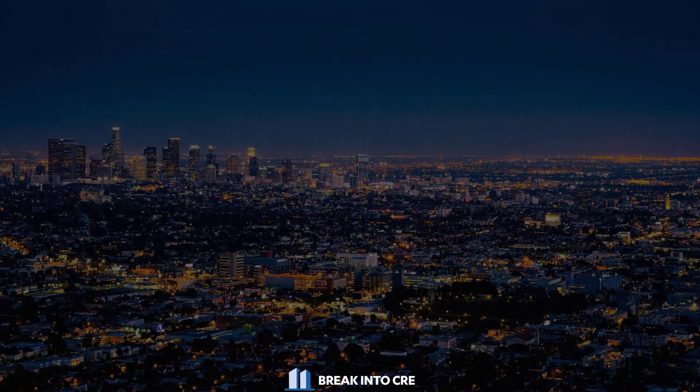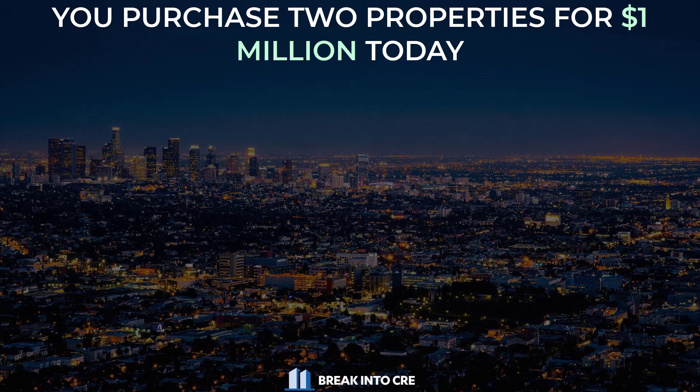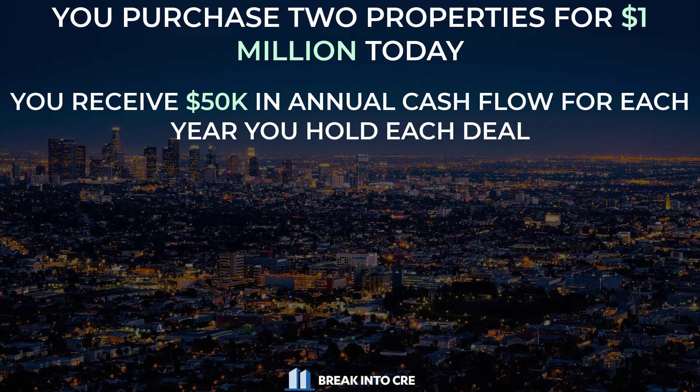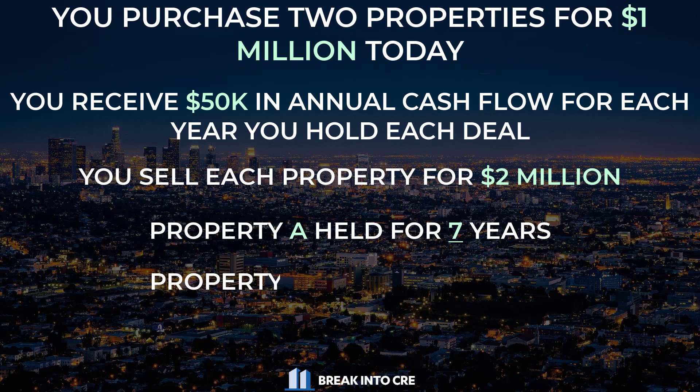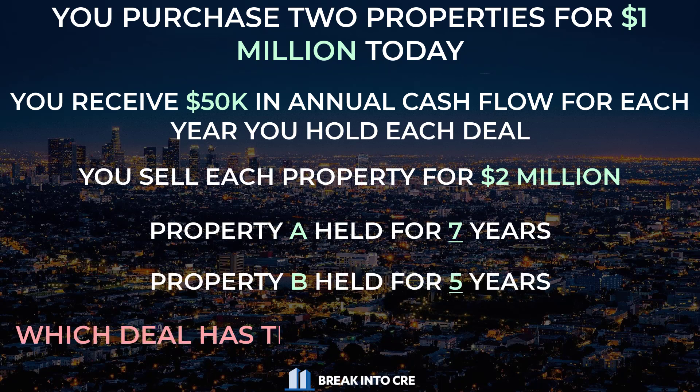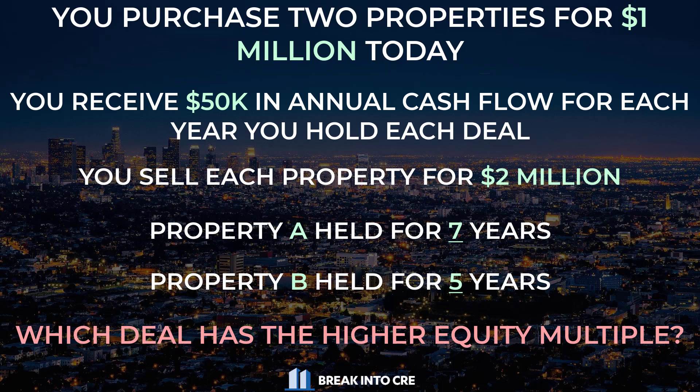A question you might be asked on this topic could sound like: you purchase two properties for $1 million today, you receive $50,000 in annual cash flow for each year you hold each deal, and then you sell each property for $2 million — but you hold Property A for seven years and only hold Property B for five years. Which deal has the higher equity multiple? Since the equity multiple measures the total sum of all positive cash flows throughout the entire life of the deal, the answer is Property A, even though the sale proceeds won't be received until a full two years after the scenario in Property B.